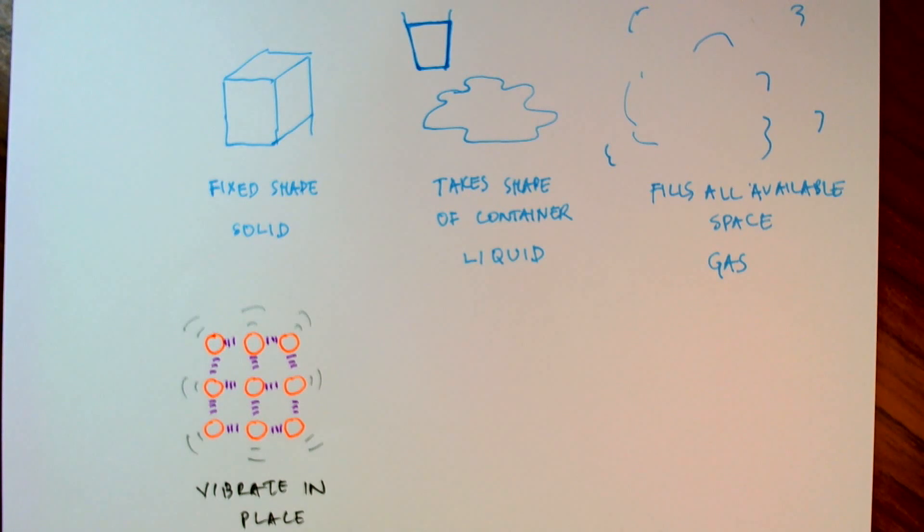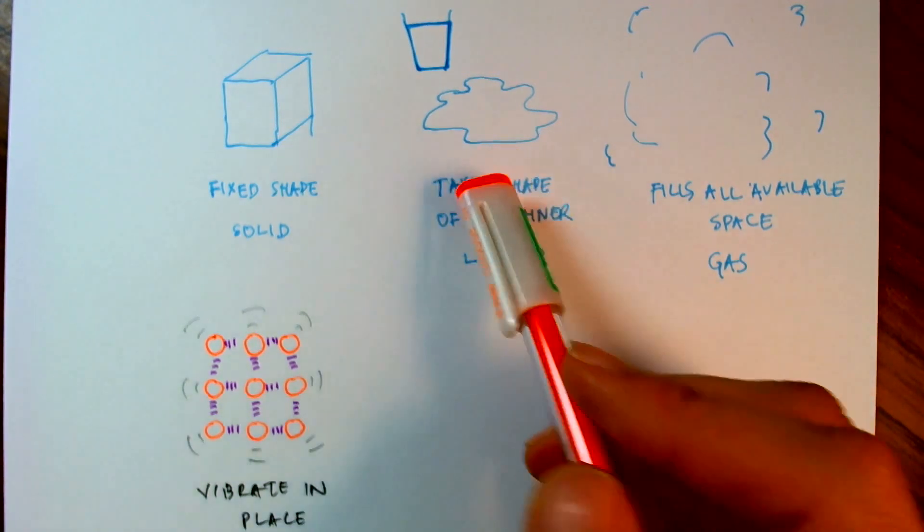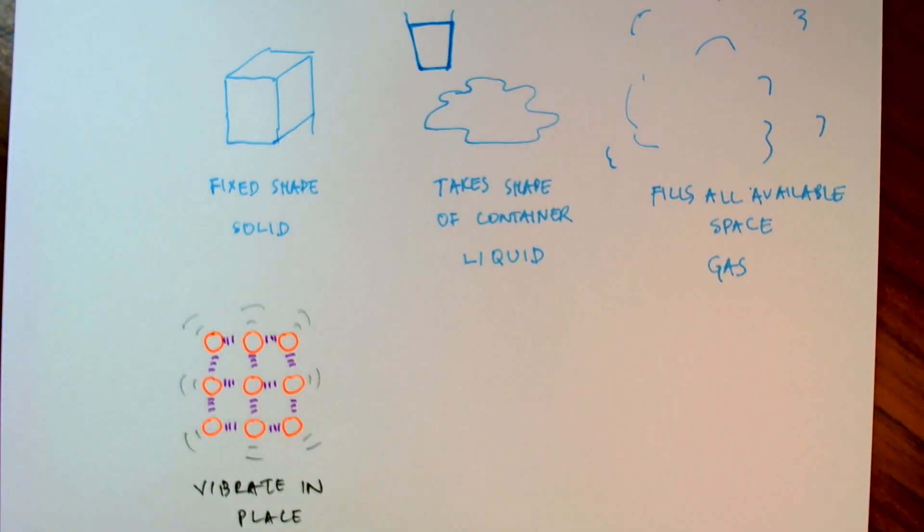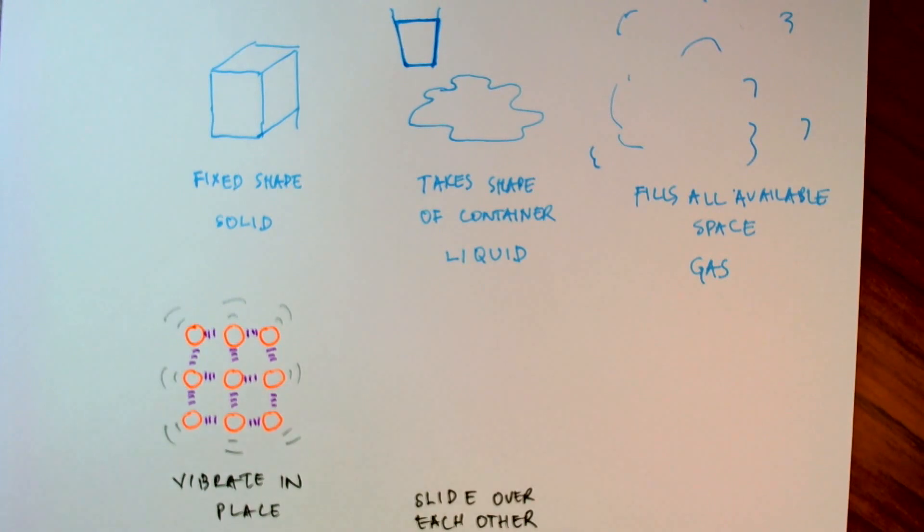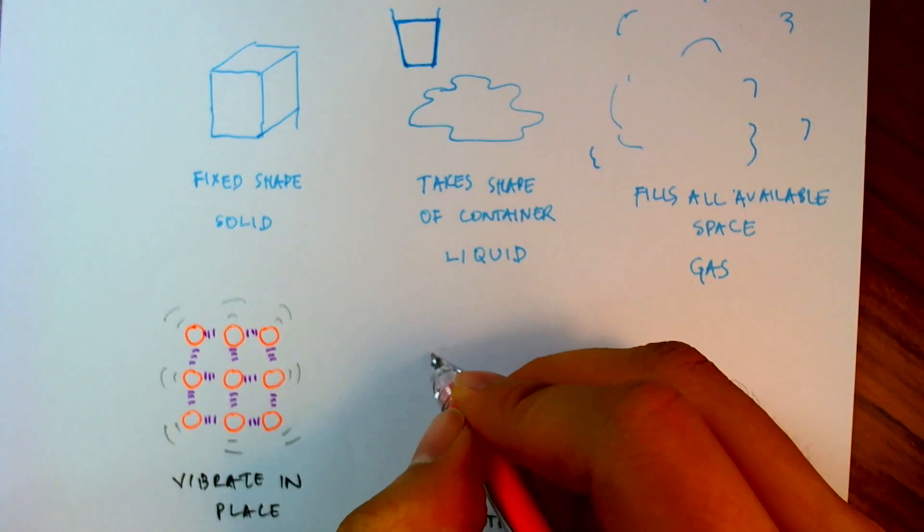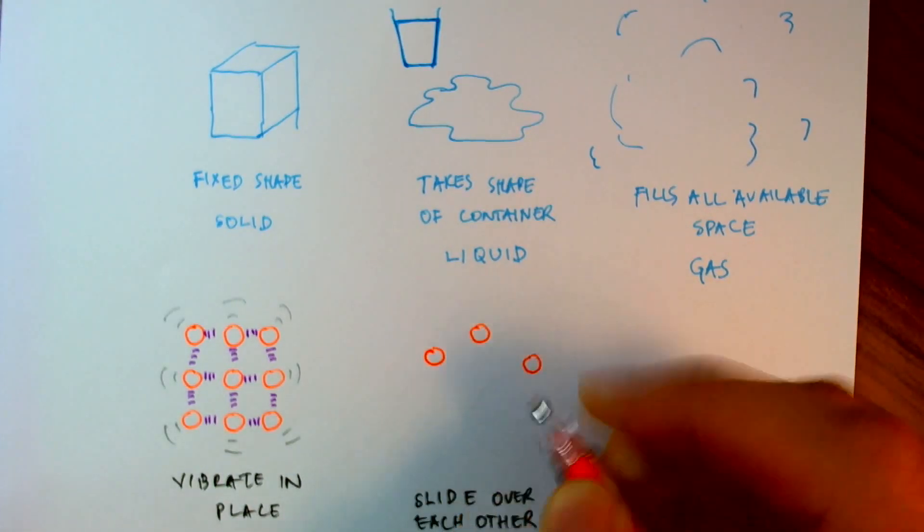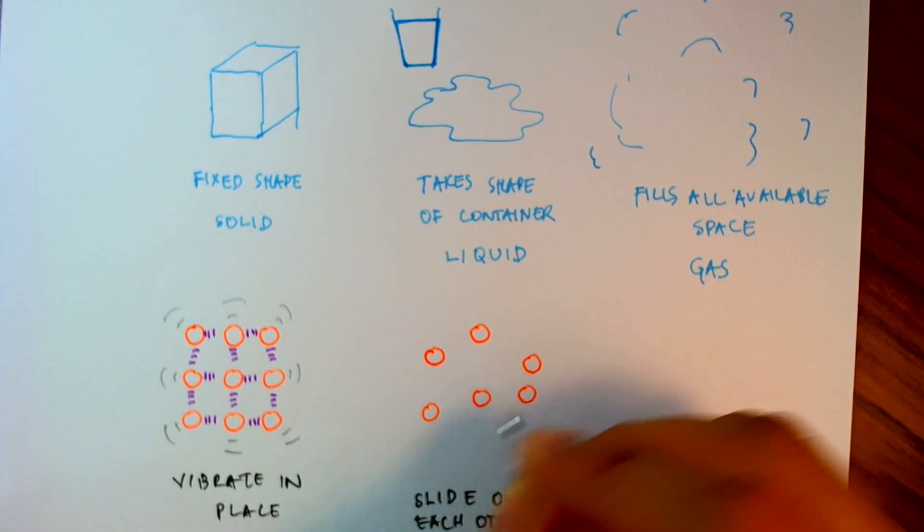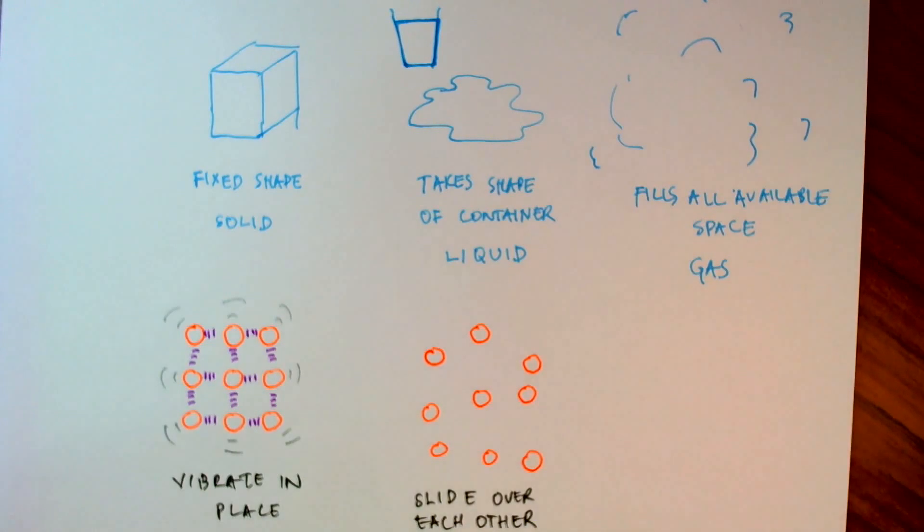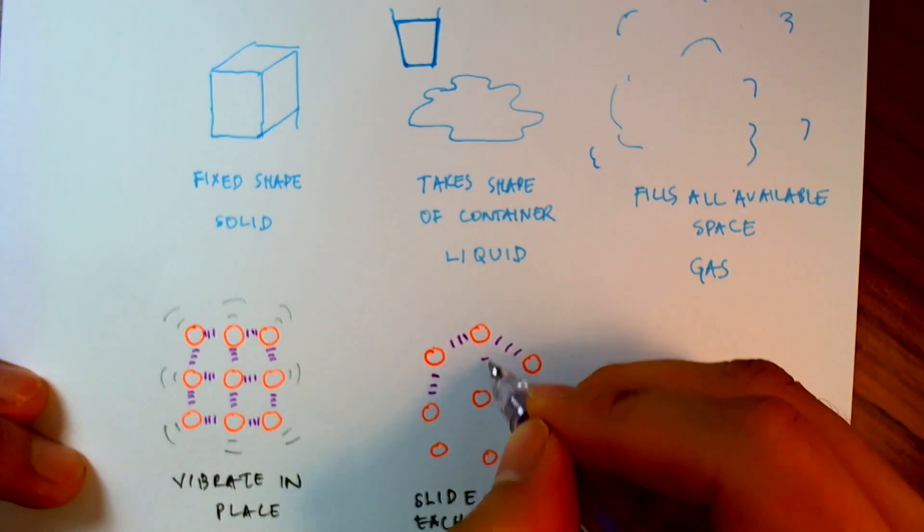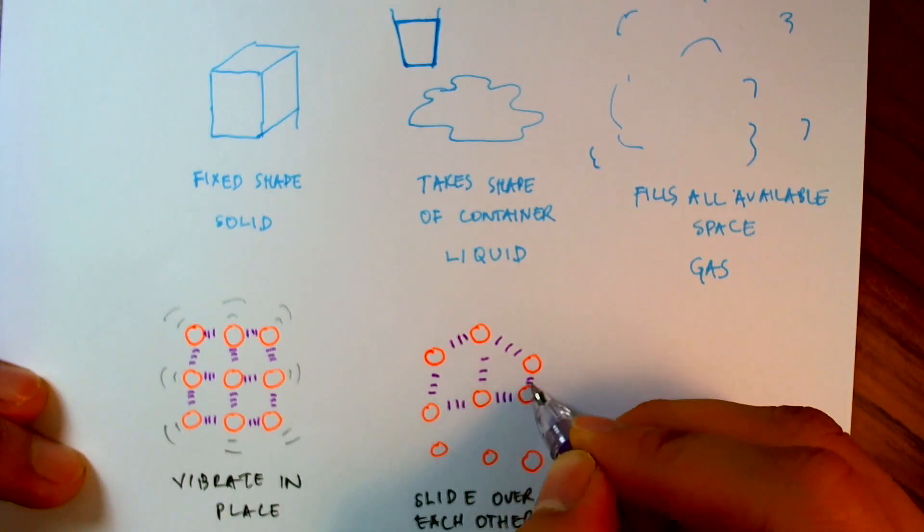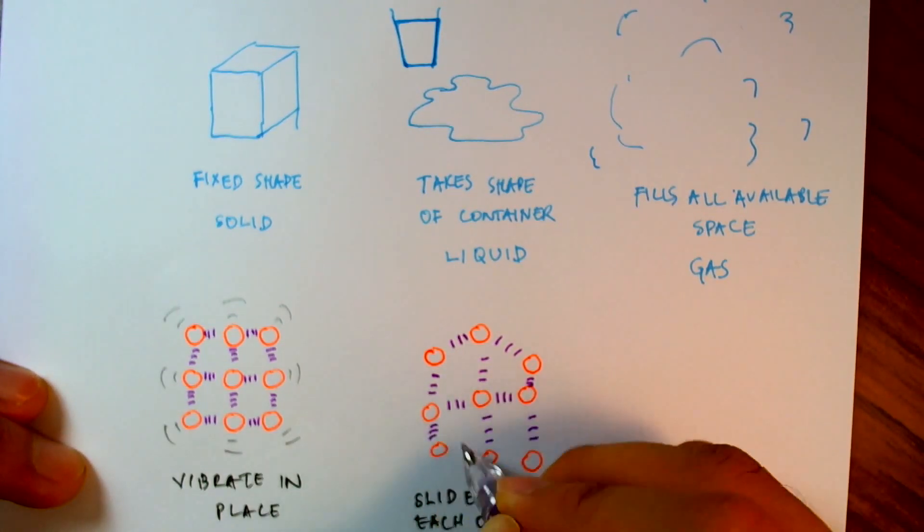For a liquid, we might imagine that we want them to be able to slide so that they can take the shape of the container. So they need to be able to slide over each other, such that they'll take the shape of the container. So they're not regular anymore, just somewhat further apart. And the forces between them are now weaker, so that they can slide over each other. So we've reduced the forces between them, and they're now able to slide over each other.